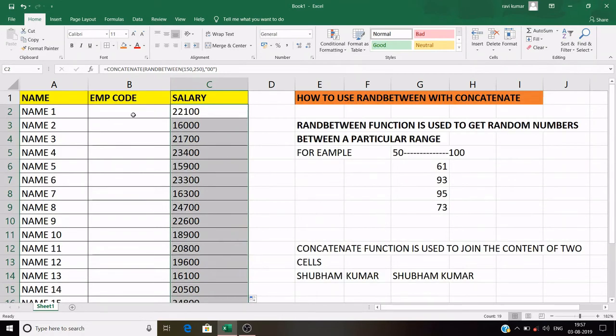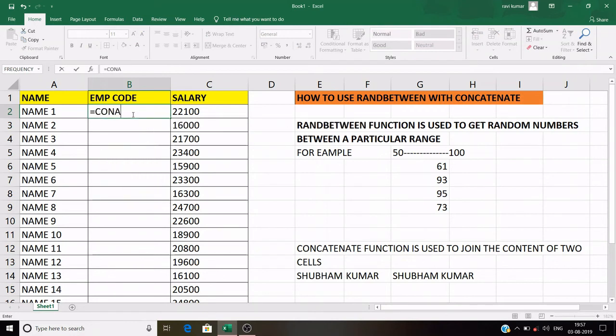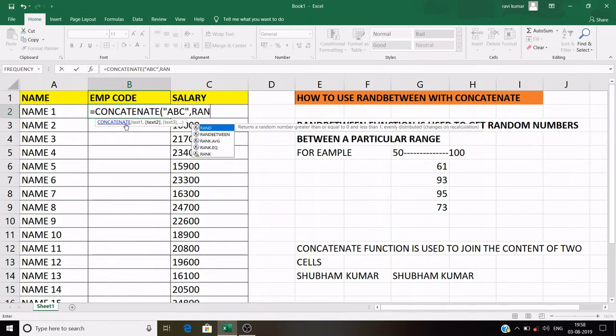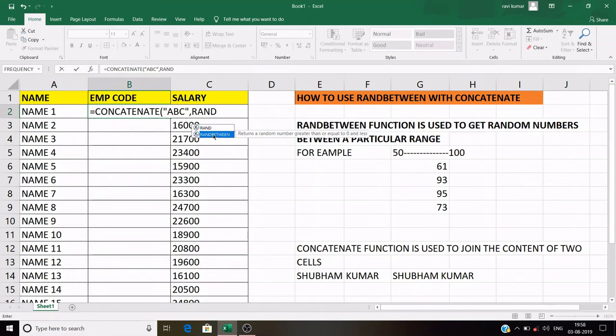Similarly, you can do with employee code. Suppose my company name is ABC Limited. I want ABC as a prefix of employee code of all the employees. So what will I do? I'll use CONCATENATE function, write ABC with the inverted comma, because it is a text. Now I'll use RANDBETWEEN, because in the suffix I want a number, any number. So for any number, I use RANDBETWEEN. I want number between 123 and 234, and press enter.